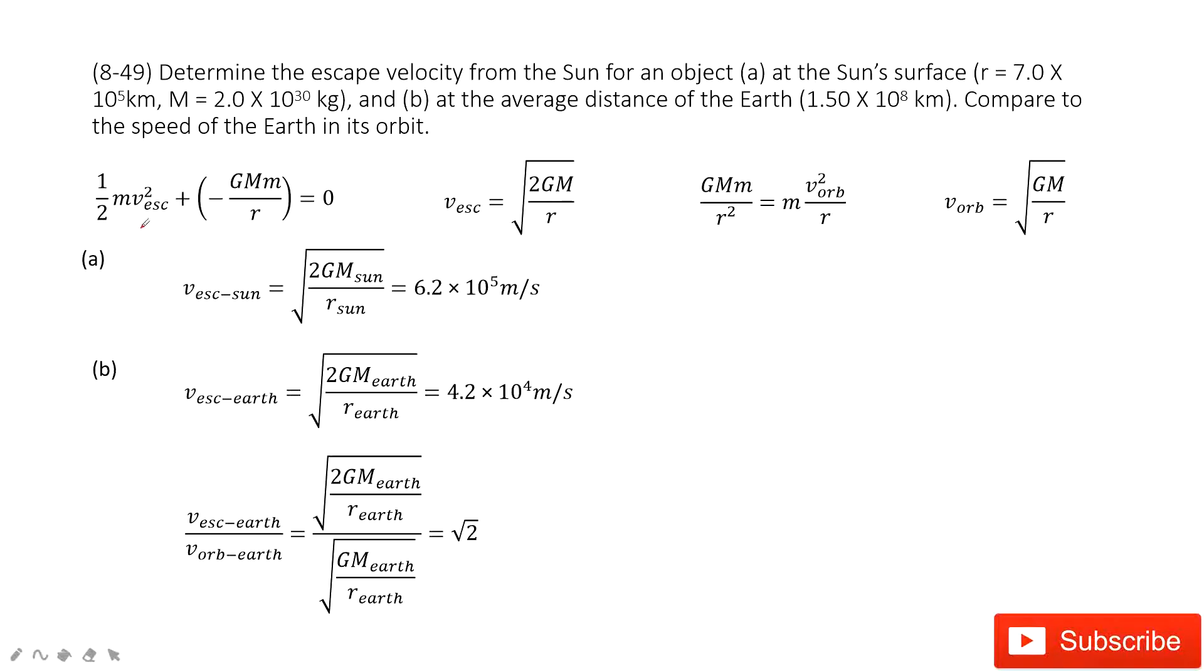First, we consider this equation. This equation also shows in your textbook. You can see for the escape velocity, that means the Sun cannot hold this planet. So the Sun cannot hold the planet. What does that mean? That means the kinetic energy plus potential energy is zero.